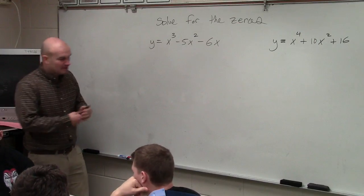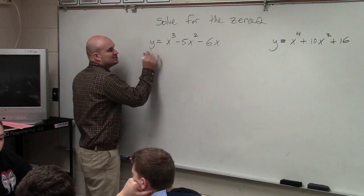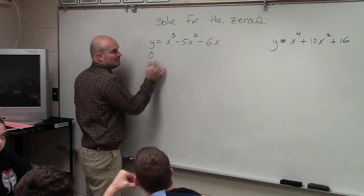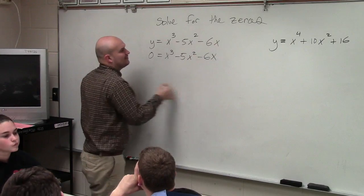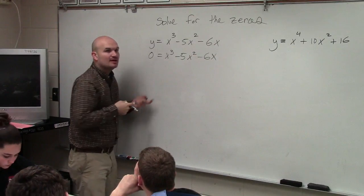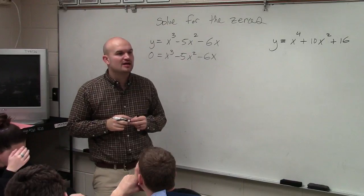So like what we have covered before, to determine the zeros, we're simply going to set our equation equal to zero. And then what we want to do is determine, first of all, is there anything we can factor out that all three of our terms share?